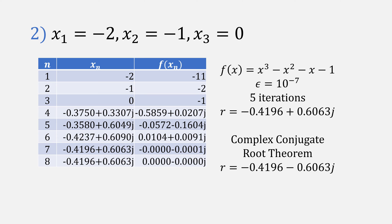For our second approach, let's use the starting points of minus 2, minus 1, and 0. And in this case, it took about five iterations to find the root, which was this complex number here. But by the complex conjugate root theorem, we actually found two roots. So we found all three roots of our function.